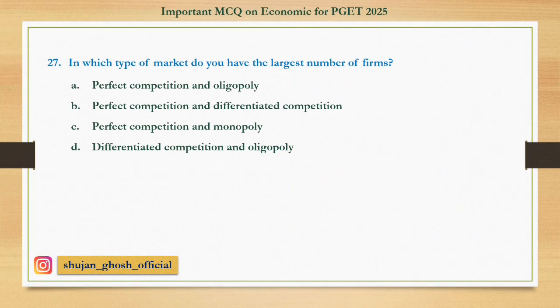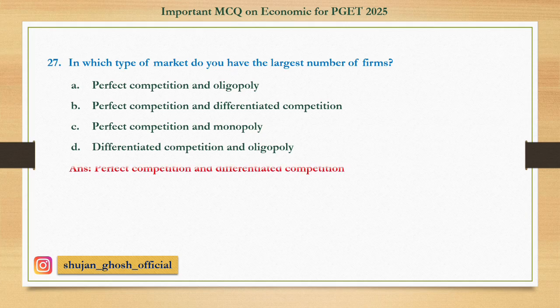Question number twenty-seven: In which type of market do you have the largest number of firms? Option A: perfect competition and oligopoly; B: perfect competition and monopolistic competition; C: perfect competition and monopoly; D: monopolistic competition and oligopoly. Answer: perfect competition and monopolistic competition.